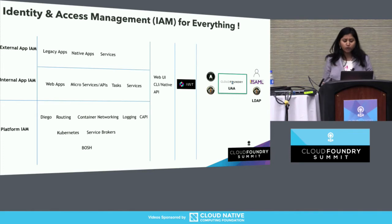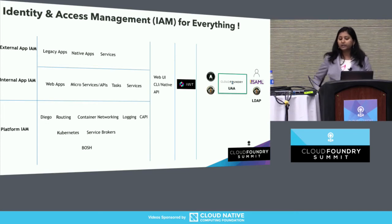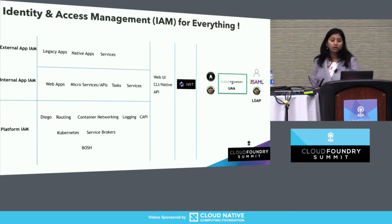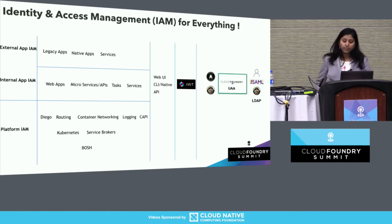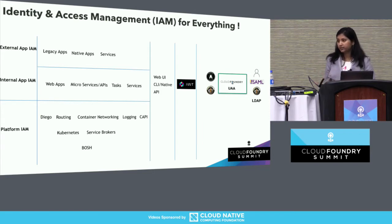From that point of view, when we set out to solve the identity challenge, the one thing we thought about was: let's create a standards-based approach to doing this. There are already standards out there for how identity is expressed, how users authenticate, and how identity information and claims are propagated across trust domains. That's where UAA comes in. UAA is abstracting out everything identity-related and providing a standards-based approach to consuming identity and access-related functionality.